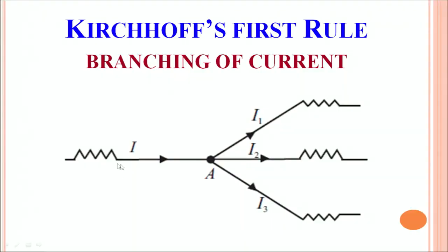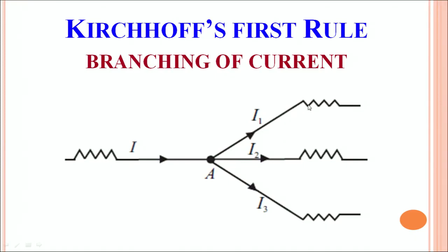Kirchhoff's first rule deals with branching of current. As you can see in this circuit, current I is proceeding towards a junction A. At junction A, it sees branching of 3 resistors — they are all in parallel. Depending on the value of the resistors in these 3 branches, the current is divided into I1, I2, and I3. If the value of a resistor is higher, then the corresponding current drawn by that branch will be lower as per Ohm's law. Similarly, if the resistor value is small, then the current drawn by that branch will be larger.